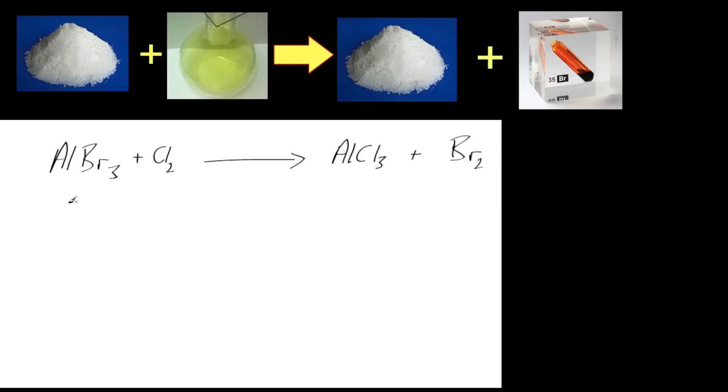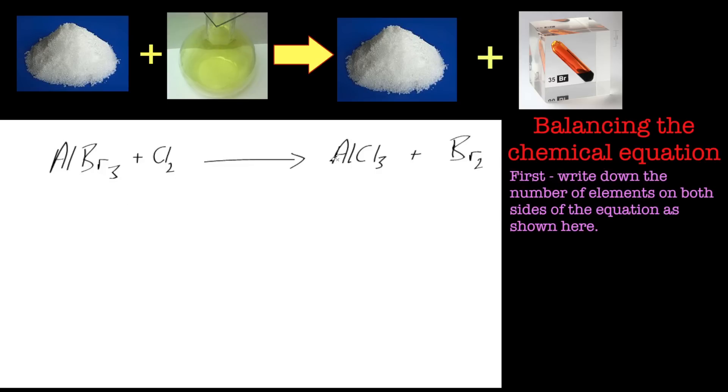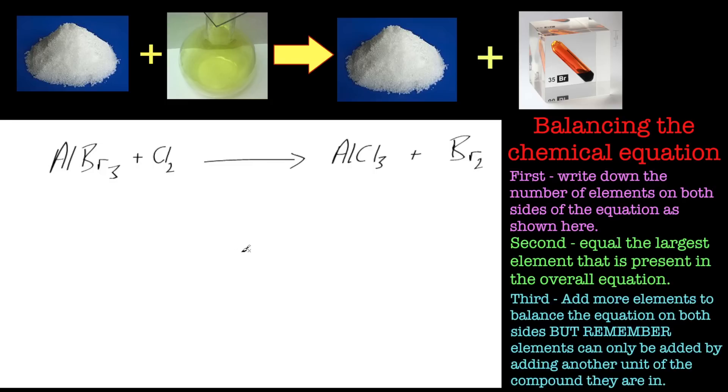Okay, let's have a look at this example of aluminium bromide reacting with chlorine to give aluminium chloride plus bromine. You heard that right—aluminium bromide plus chlorine reacting to give aluminium chloride plus bromine.